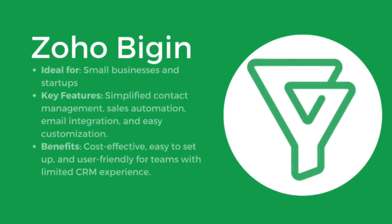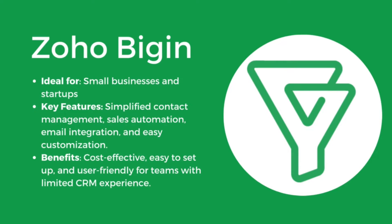It is time to make conclusions to help you choose the right system. Zoho Bigin is ideal for small businesses and startups. Key features include simplified contact management, sales automation, email integration, and easy customization. The benefits are that it's cost-effective, easy to set up, and user-friendly for teams with limited CRM experience.